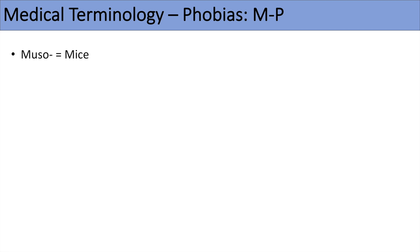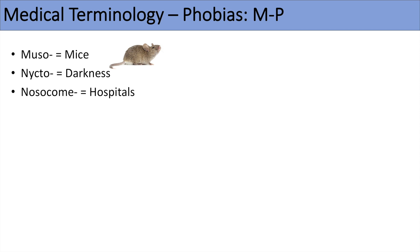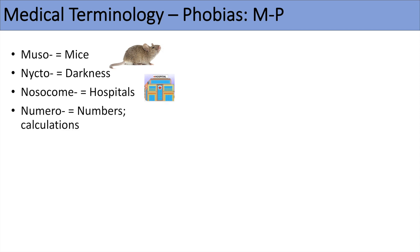The first one is muso, which means mice. So musophobia would be a fear of mice. The next one is nicto, which means darkness, so nictophobia would be a fear of darkness. The next one is nosocome, which means hospital, so nosocomophobia would be a fear of hospitals — you can think of nosocomial infections or hospital-related infections. The next one is numero, which means numbers or calculations, so numerophobia would be a fear of numbers or calculations. This is very easy to remember.